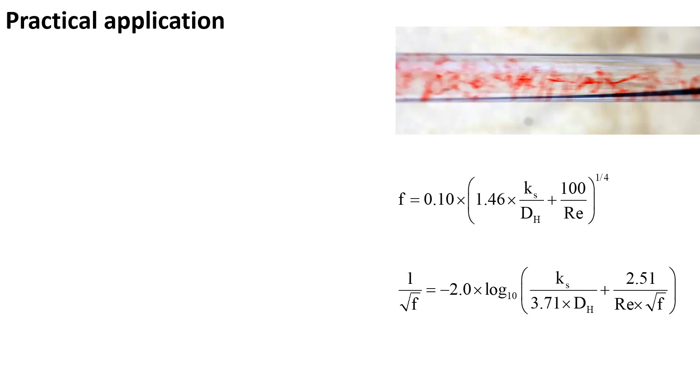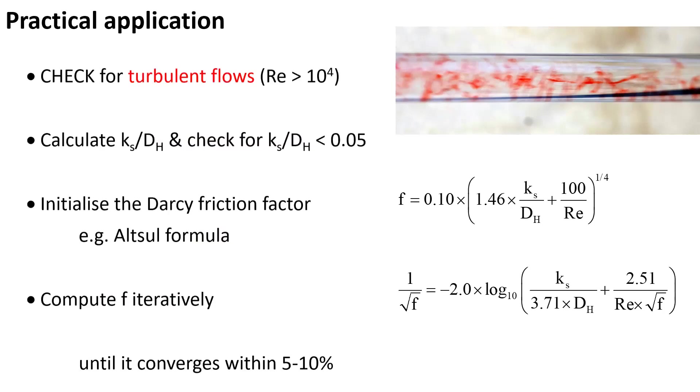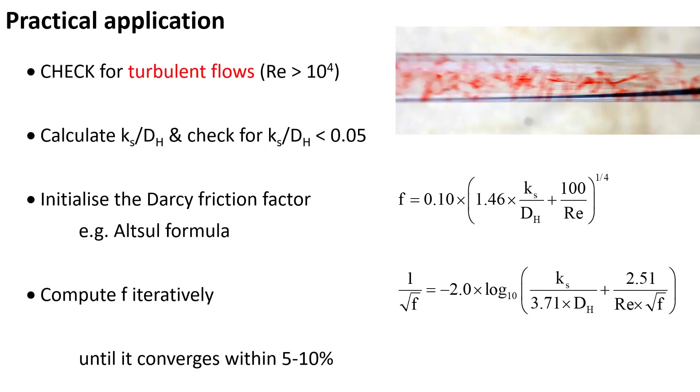In a practical application, the first step is to check that the flow is turbulent, namely that the Reynolds number is greater than 10 to the 4. Then we calculate the relative roughness height and check that it is less than 5%.